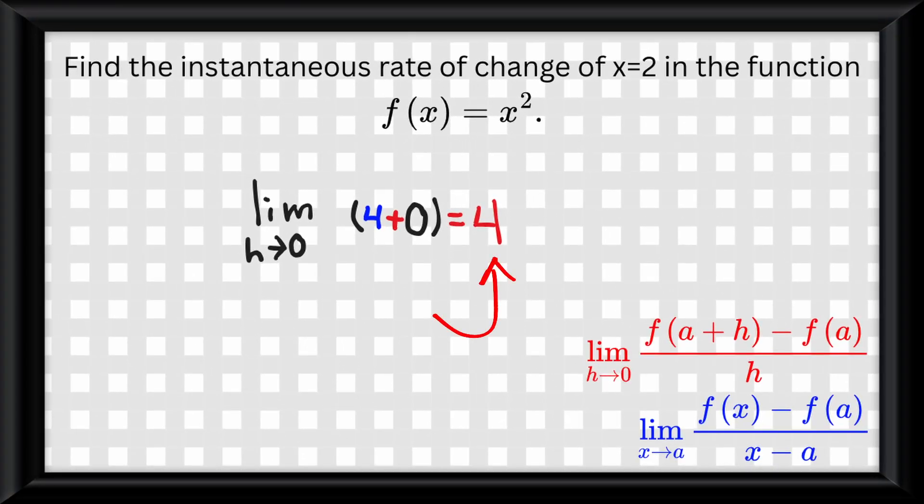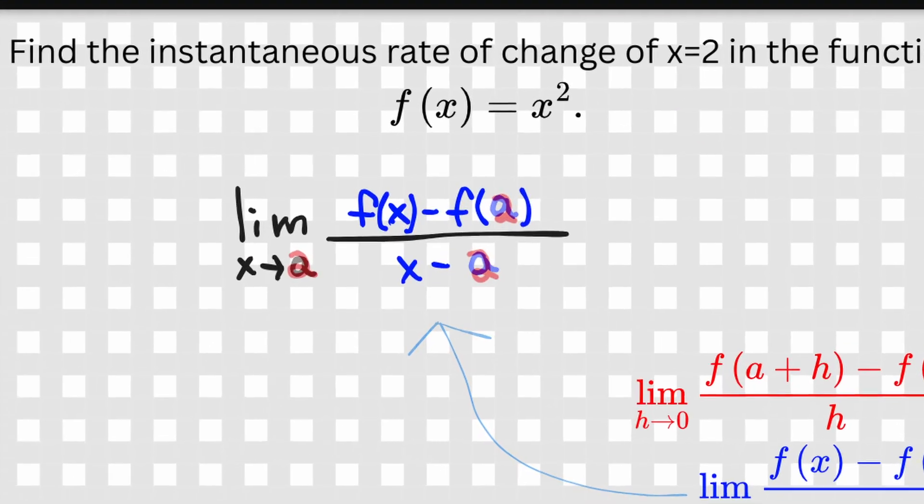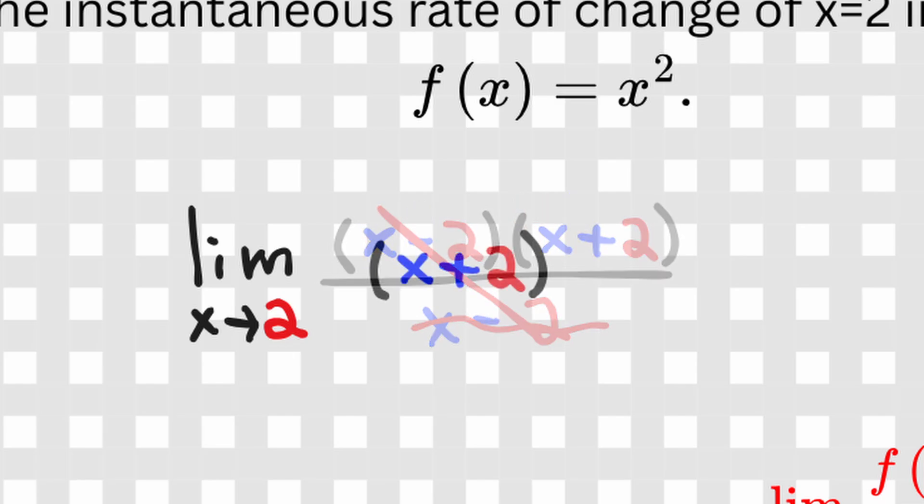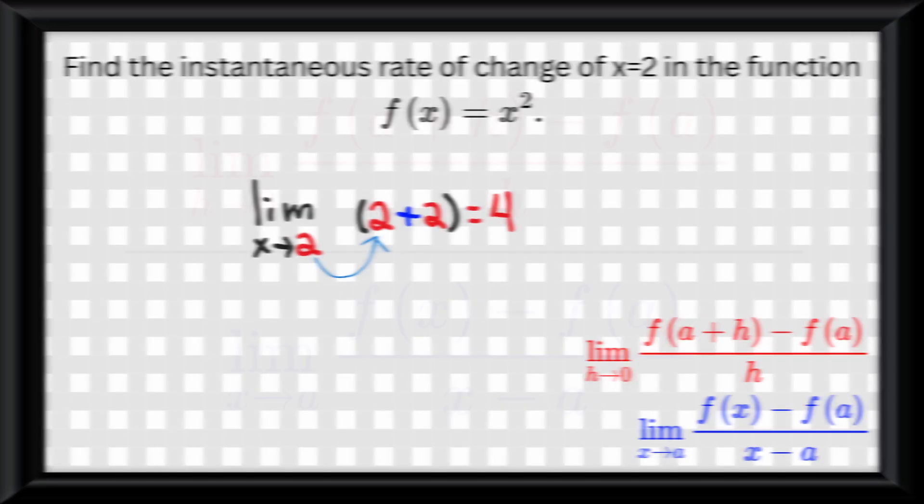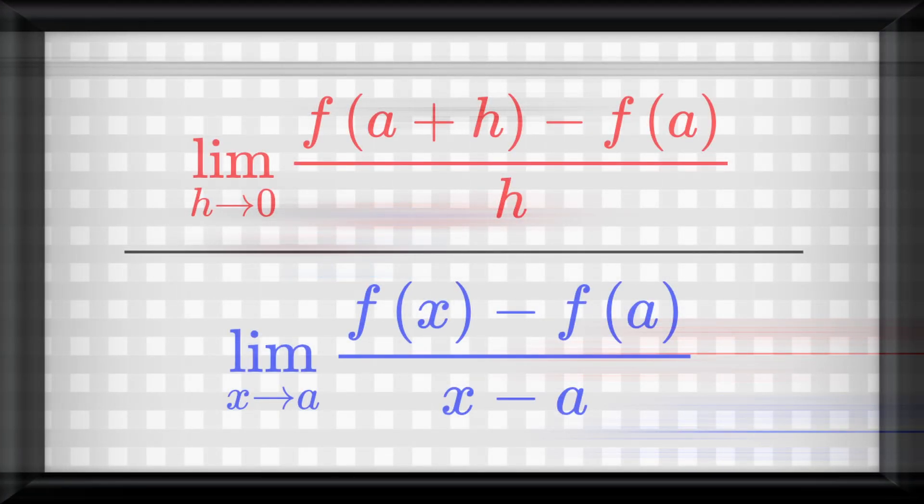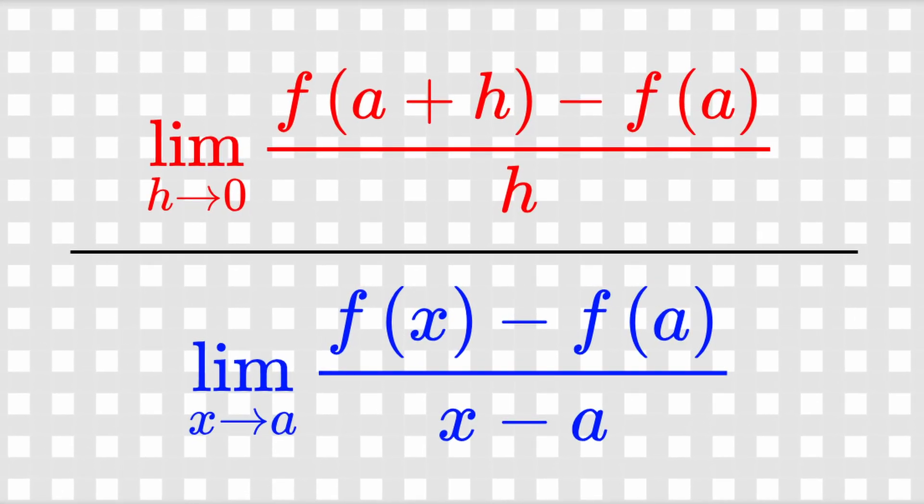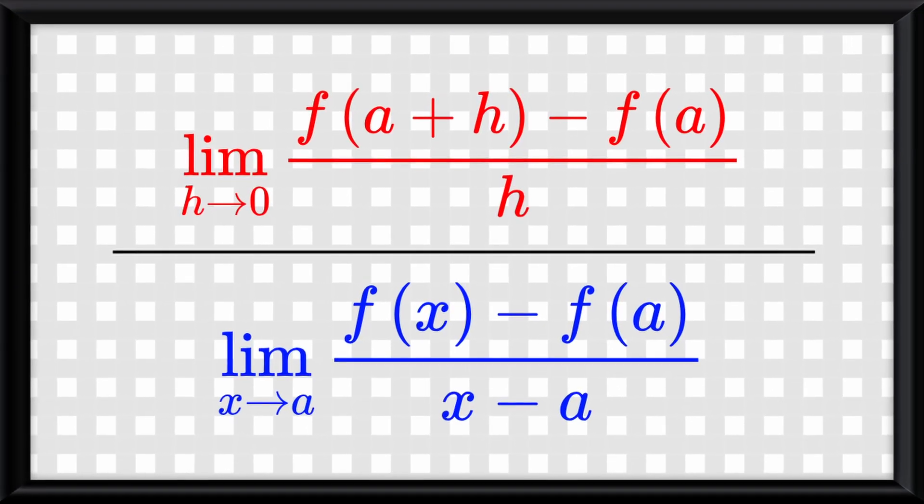And that would be the instantaneous rate of change, or you could call it the slope of the tangent line, at x equals 2. Now let's quickly do the alternative way you can do by using the other formula. First we plug everything in, then simplify the numerator. Then we foil the numerator, cancel out the x minus 2s. And now we can use direct substitution and we get 4, just like in our other formula. So, as nicely as I possibly can say, you need to memorize both of these formulas. They are very, very important.